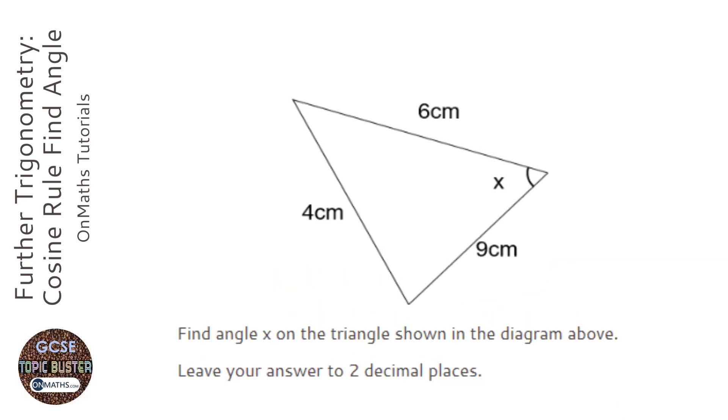Okay, so we've got a triangle here, and we're trying to find an angle, and we're given three lengths. Whenever you've got a situation with three lengths and an angle, it's going to probably use the cosine rule.